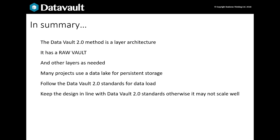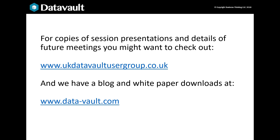In summary, the Data Vault 2 method has a base layer called the raw vault. There are patterns out there with a data lake, data marts and other layers that you might want to copy, but in the end it is an architecture you can flex to meet your own project's requirements. Data Vault 2 has standards that support scalability and you should follow them as closely as you can. You can download user group presentations from the user group website, and we also offer Data Vault 2 and information governance related blogs and white papers from our company site.